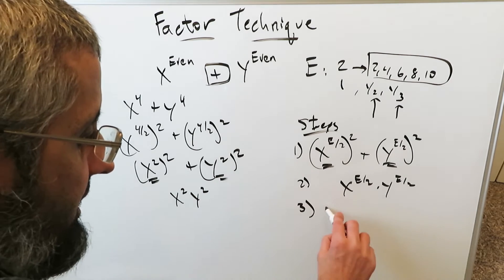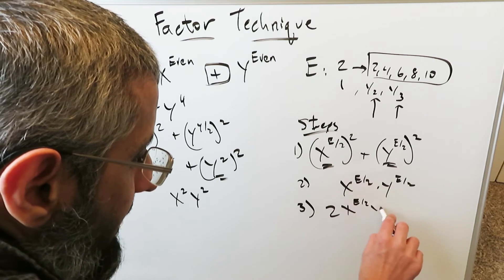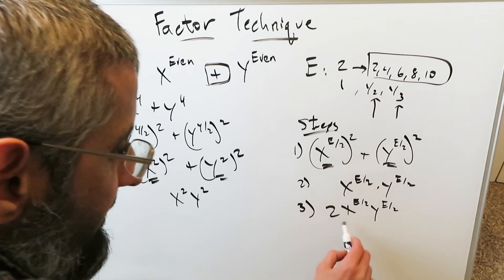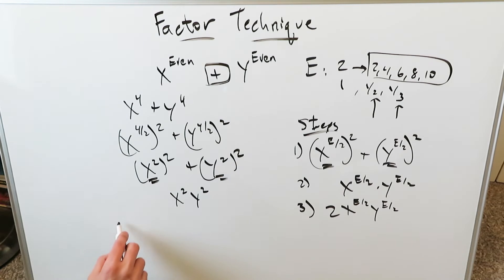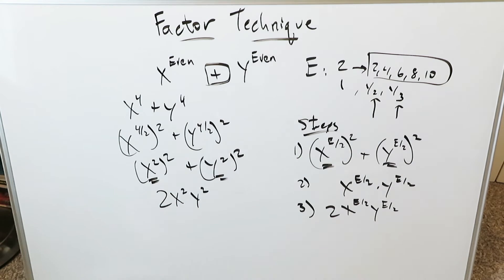Step number 3, double them. Multiply them by 2. 2x to the power of e over 2 and y e over 2. The reason why you're doubling them, you can think about something like a squared plus b squared plus 2ab or a squared plus b squared minus 2ab. You always have this doubling term. This doubling term is something similar to something like this. It's a doubling factor. That's all what it is. If you've doubled it over here, you've got to double it here. And we're good. That's step number 3.